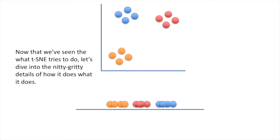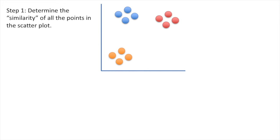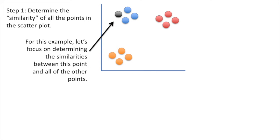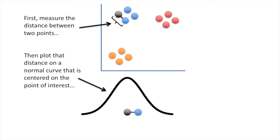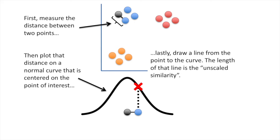Now that we've seen what t-SNE tries to do, let's dive into the nitty-gritty details of how it does what it does. Step 1: Determine the similarity of all the points in the scatterplot. For this example, let's focus on determining the similarities between this point and all of the other points. First, measure the distance between two points. Then plot that distance on a normal curve that is centered on the point of interest. Lastly, draw a line from the point to the curve. The length of that line is the unscaled similarity. I made that terminology up, but it'll make sense in just a bit, so hold on.